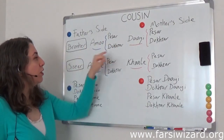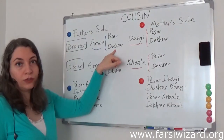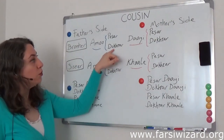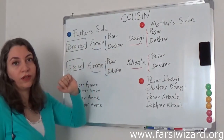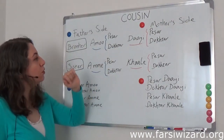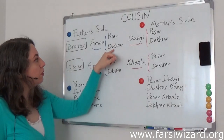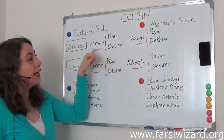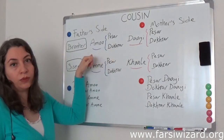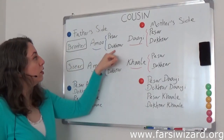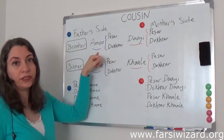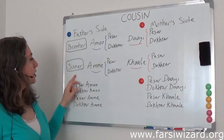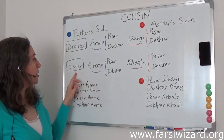If your amu has a daughter — 'dokhtar,' you remember this word from one of the previous videos — this cousin will be your 'dokhtar amu,' which literally means 'daughter of paternal uncle.' So the same logic applies here.